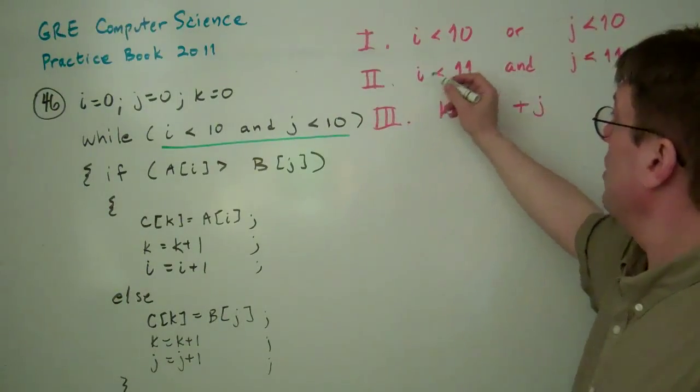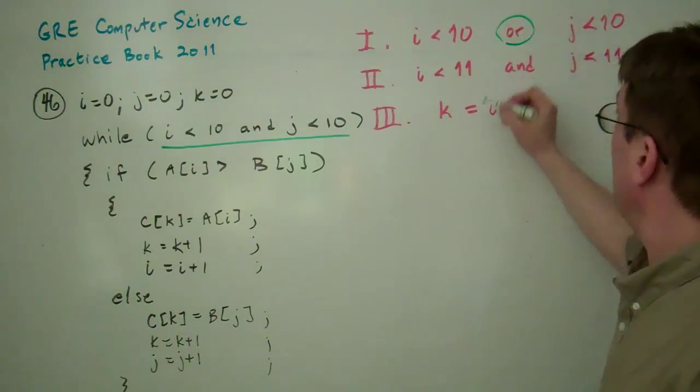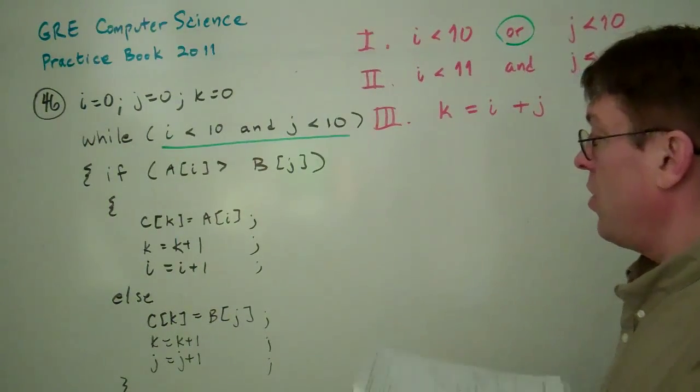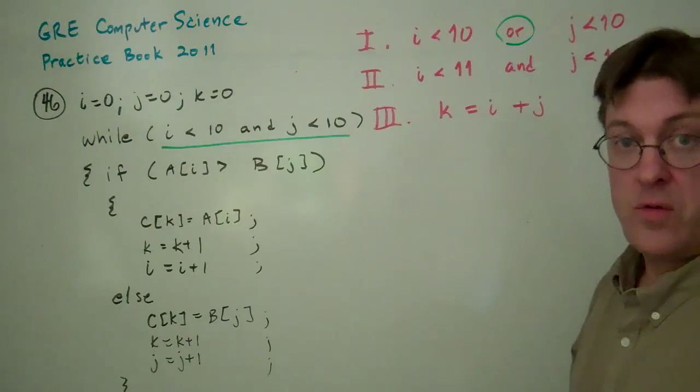Now, this one here says I is less than 10 or J is less than 10. And, of course, this is true.